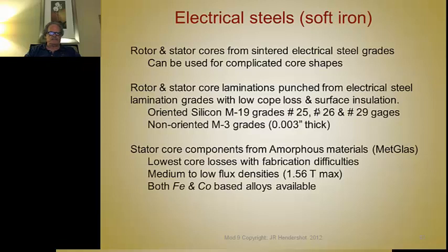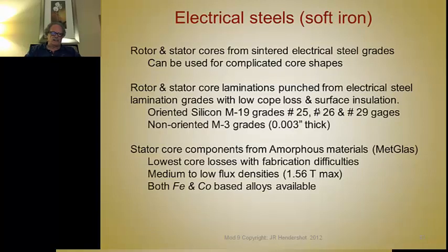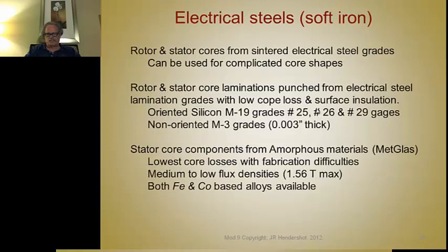The punched iron materials are made from electrical steels that have been rolled out to thin, accurate gauge thicknesses. The most common ones are 24 gauge, 26 gauge, and 29 gauge. The 24 gauge is 25 thousandths of an inch thick, 26 gauge is 18.5 thousandths thick, and 29 gauge is 14 thousandths thick.